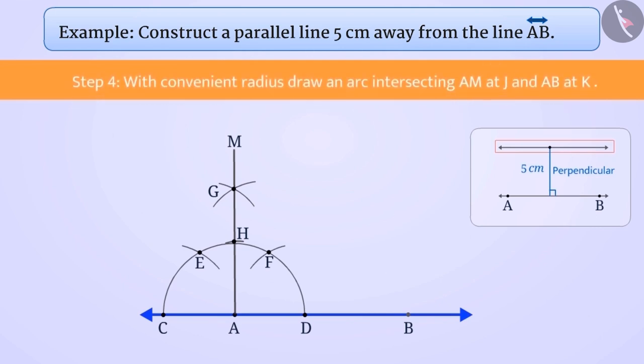Step 4: Placing the pointed end of the compass at A and with A as center and a convenient radius, draw an arc cutting M at J and AB at K.